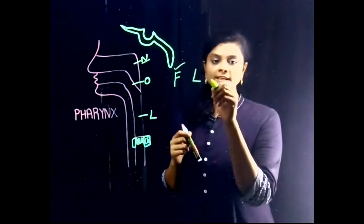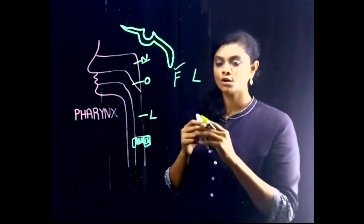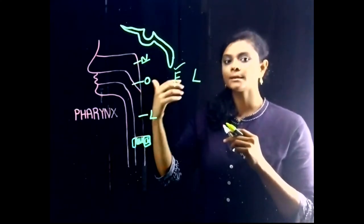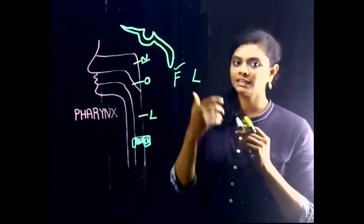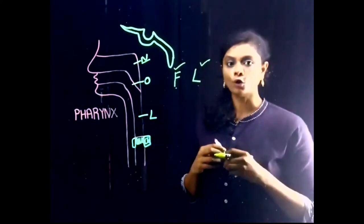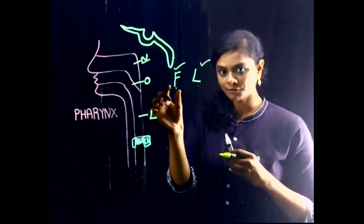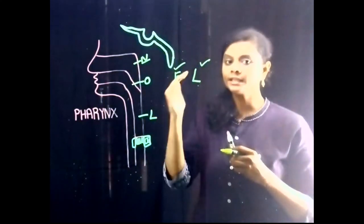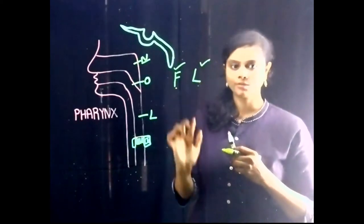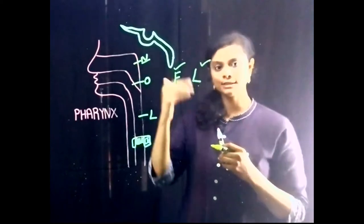The ligament is the posterior median pharyngeal ligament. These two components — pharyngobasillar fascia and the posterior median pharyngeal ligament — form the wall of the nasopharynx.